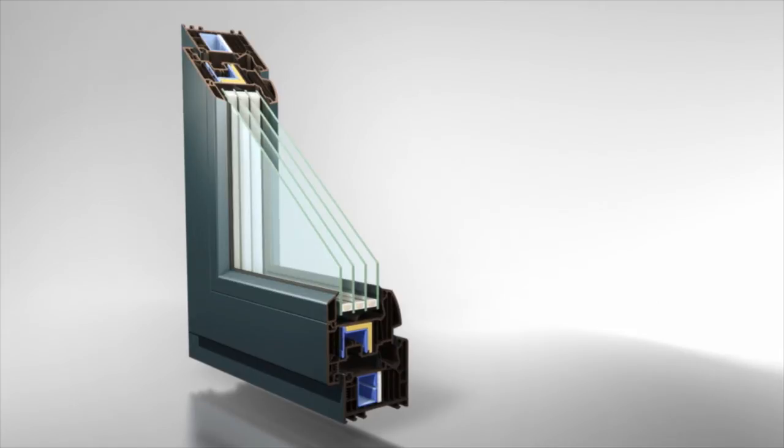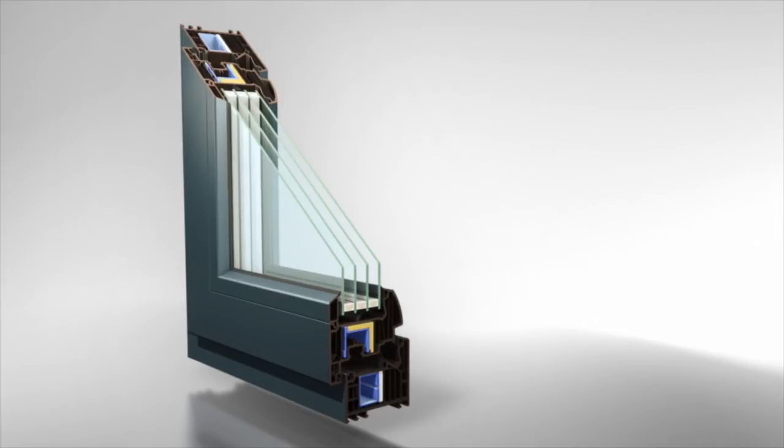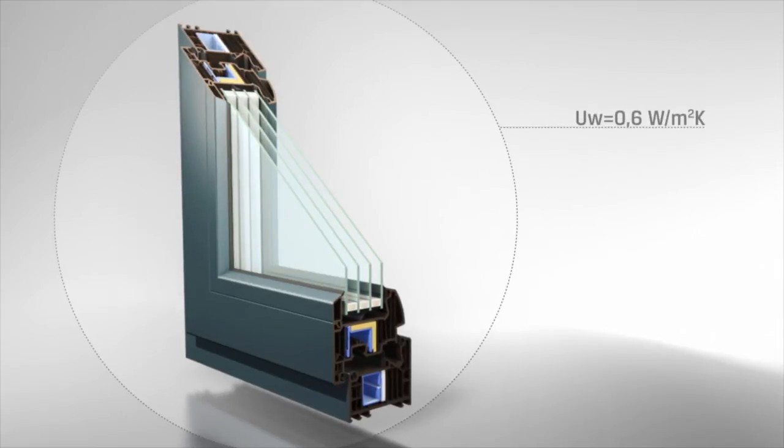The window may also be equipped with three chamber glazing units filled with argon or krypton gas. A window equipped with a krypton-filled unit achieves a window thermal transmittance value of the sensational level of 0.6.